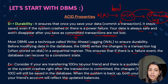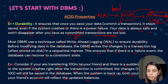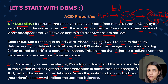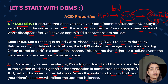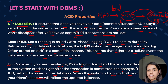Let's revise ACID properties. A — Atomicity: either all operations should be executed or none of them. C — Consistency: reads should return up-to-date data; writes must follow integrity constraints. I — Isolation: two transactions should be isolated from each other; the first transaction should commit before the second transaction starts. D — Durability: committed changes in the database should remain saved even if there is any system crash or network failure.